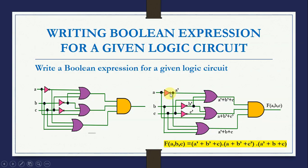The first NOT gate has input A, so its output is A bar. The second NOT gate has input B, so its output is B bar. The third NOT gate has input C, so its output is C bar. Then the OR gate has inputs A bar, B bar, and C — giving A bar + B bar + C.